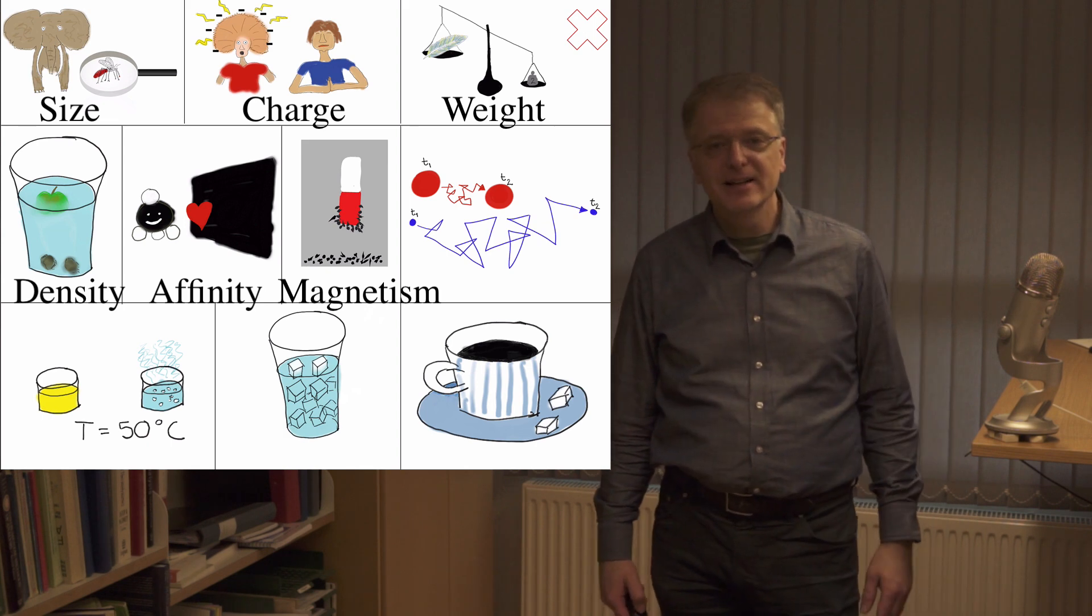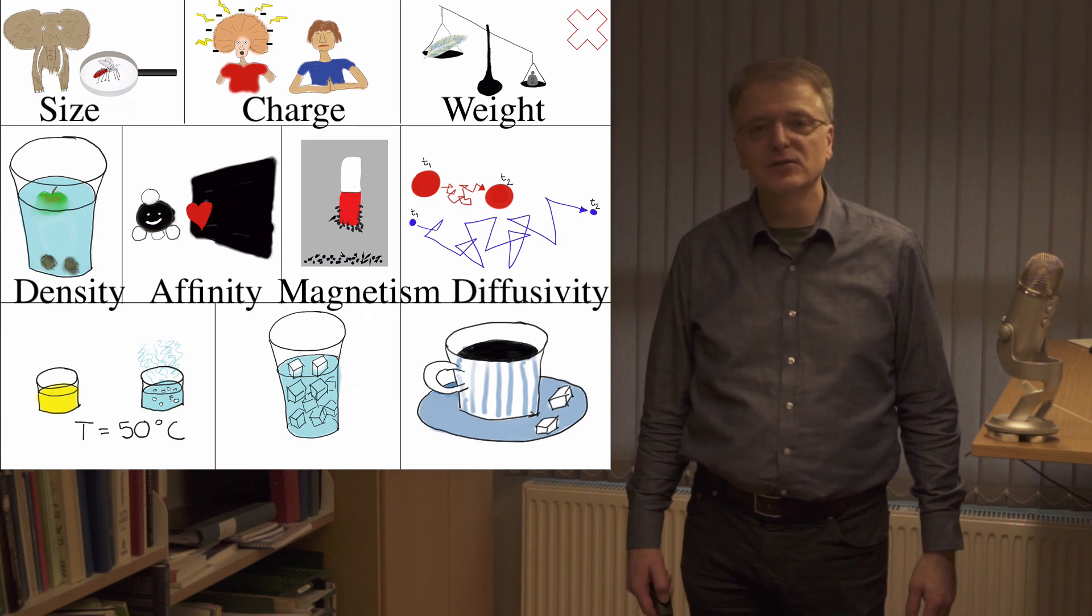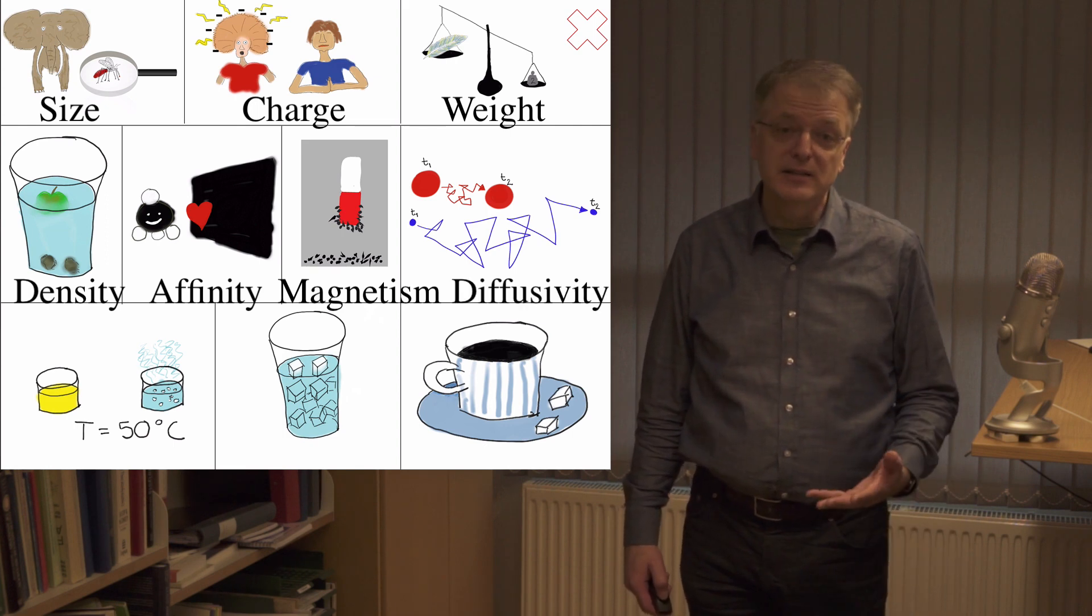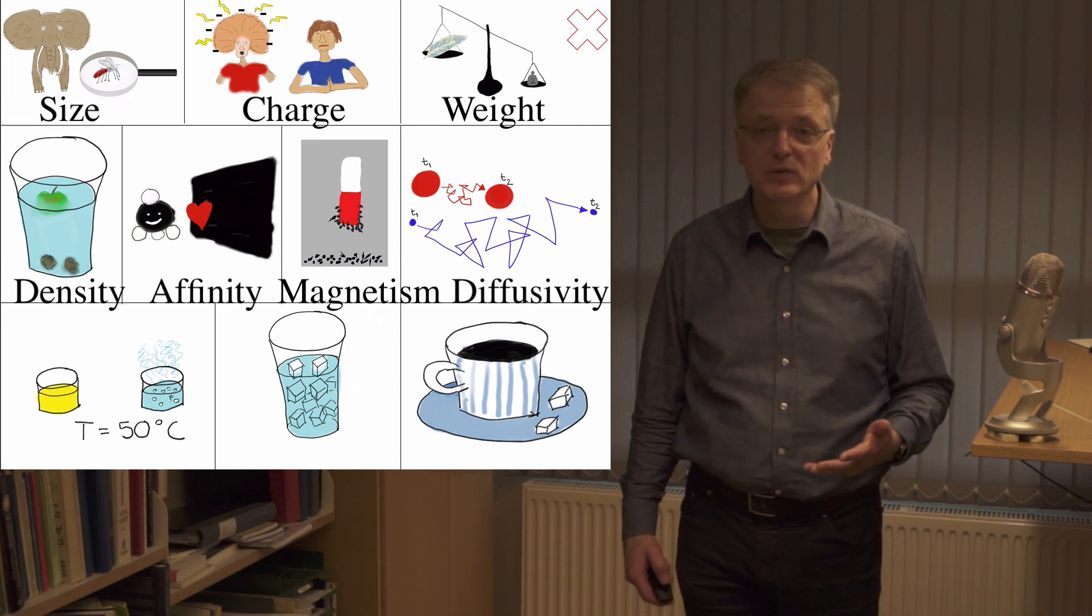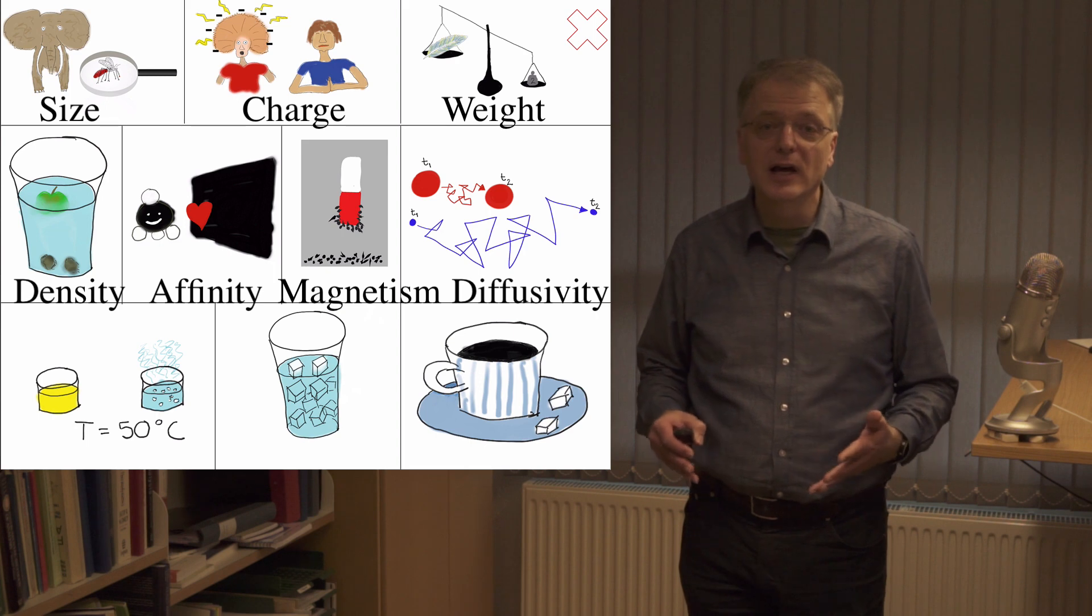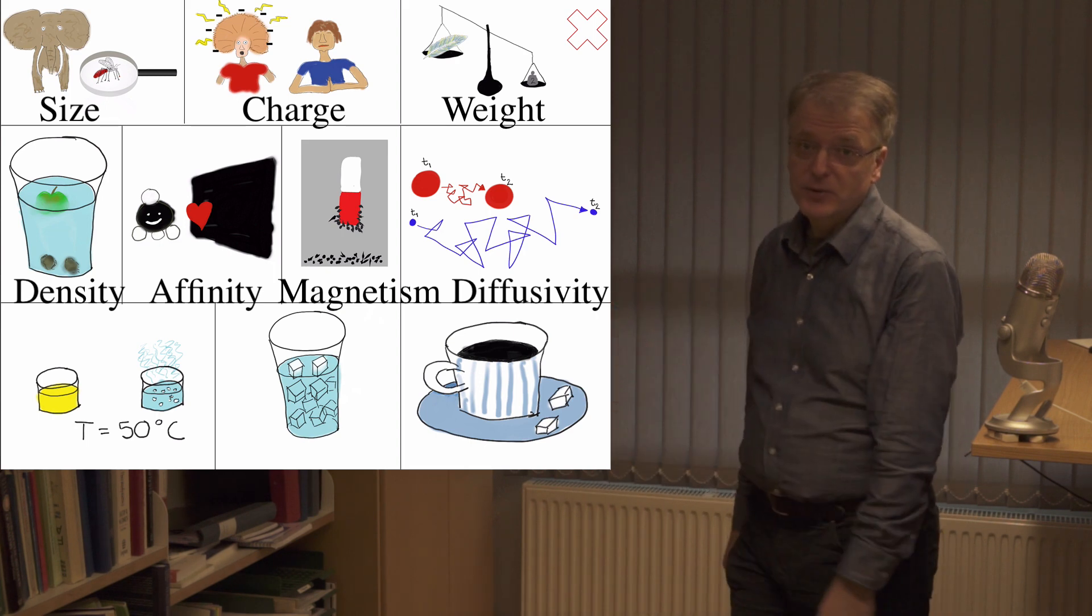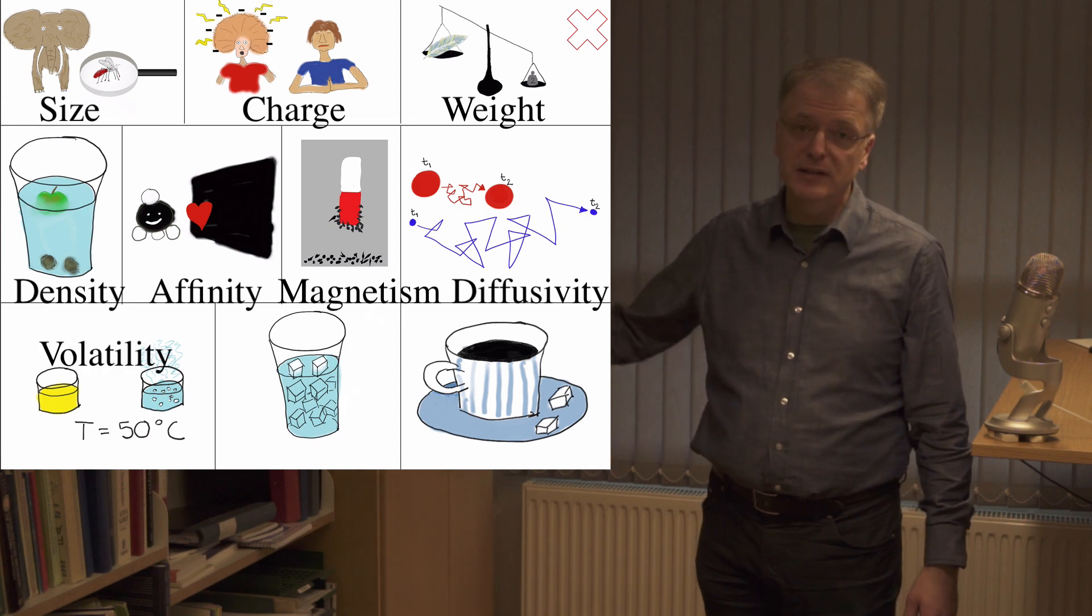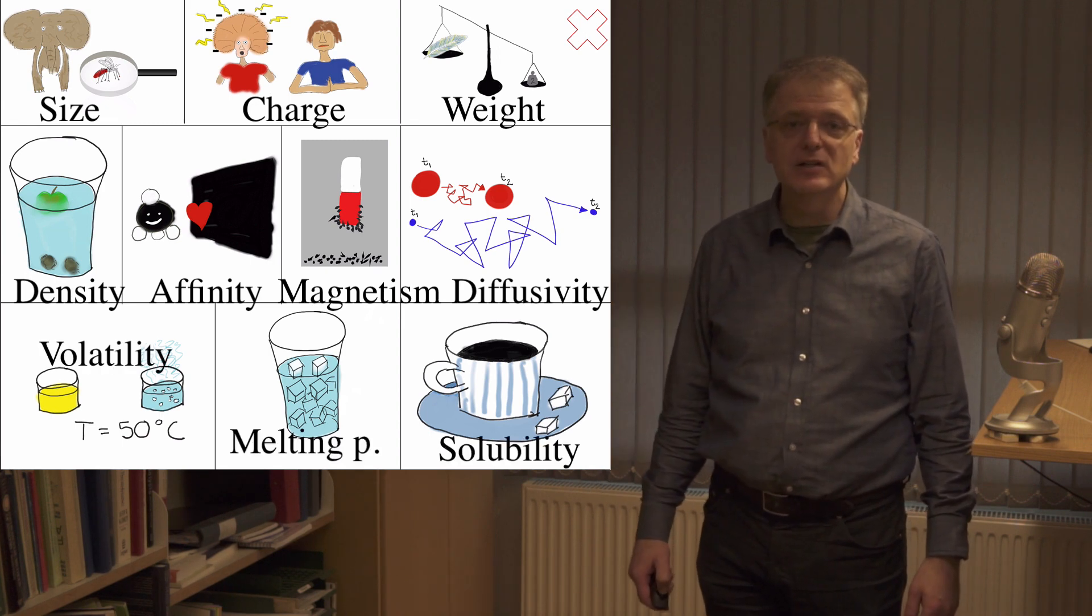Then comes yet another difficult illustration. What I try to illustrate here is diffusivity. That is that small light molecules have a larger diffusivity than big heavy molecules and thus small light molecules spread faster. On the bottom row we have volatility or boiling point, melting point and finally solubility.